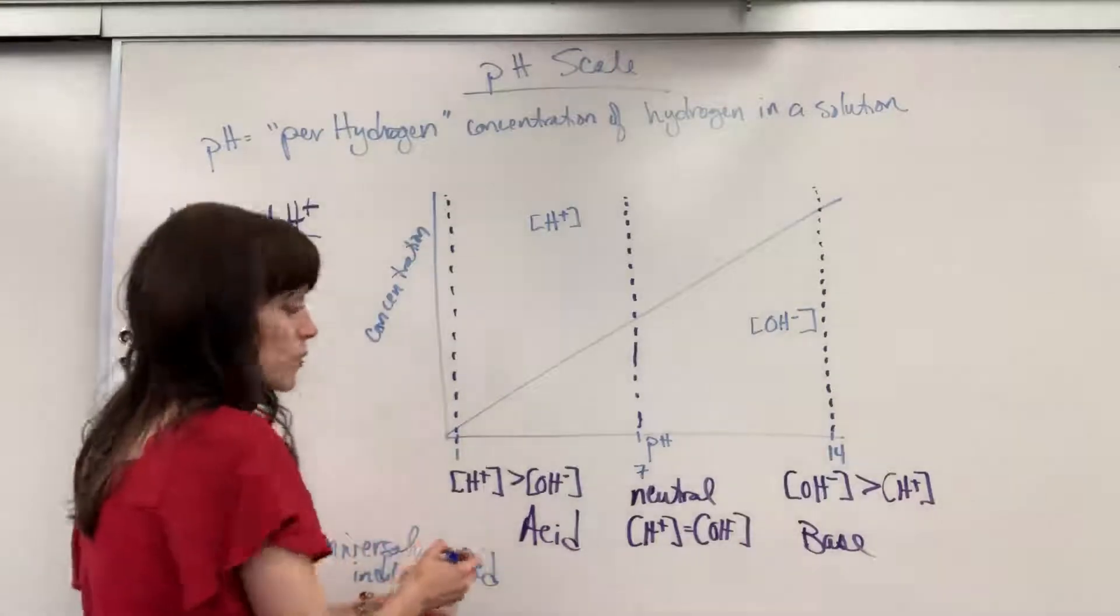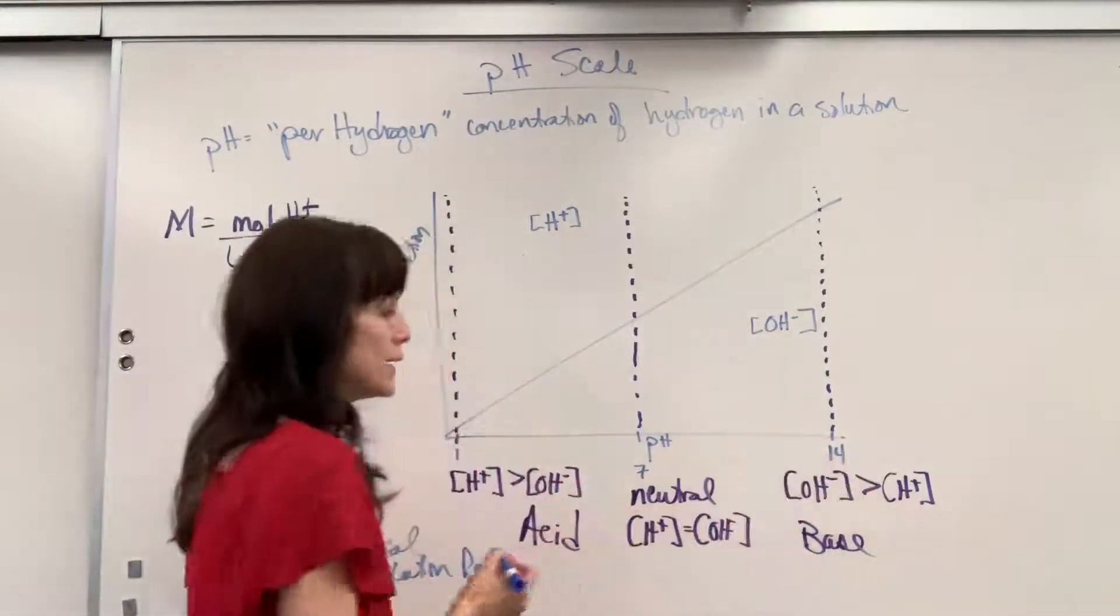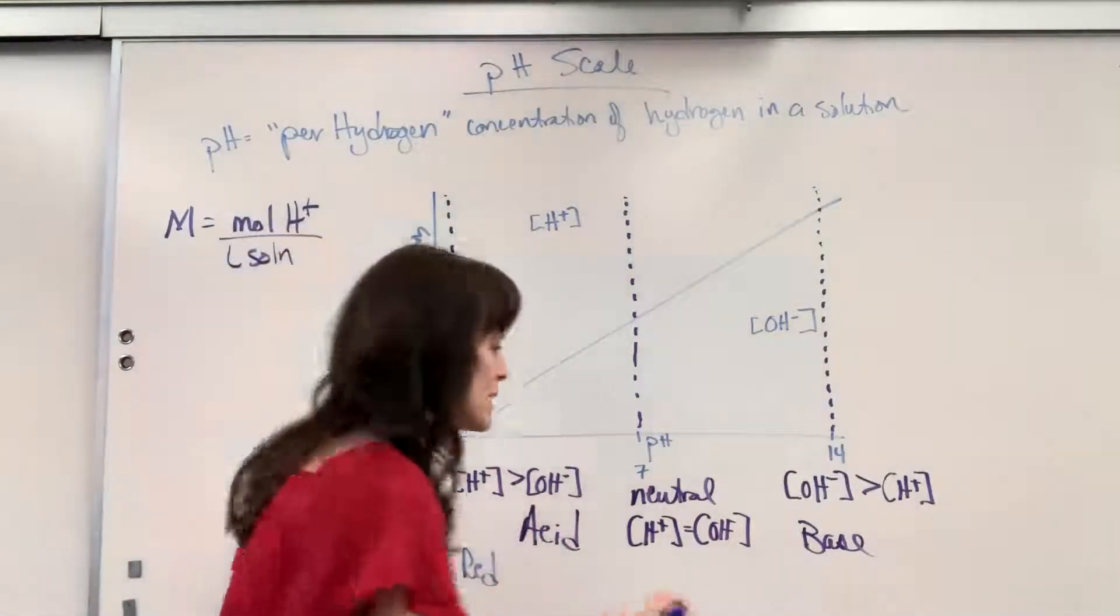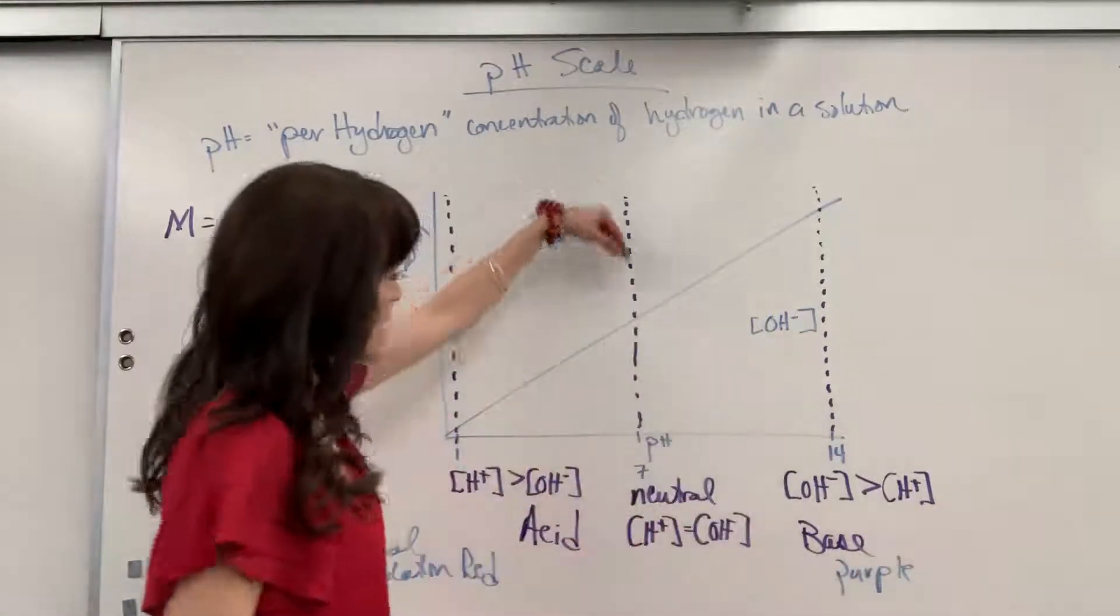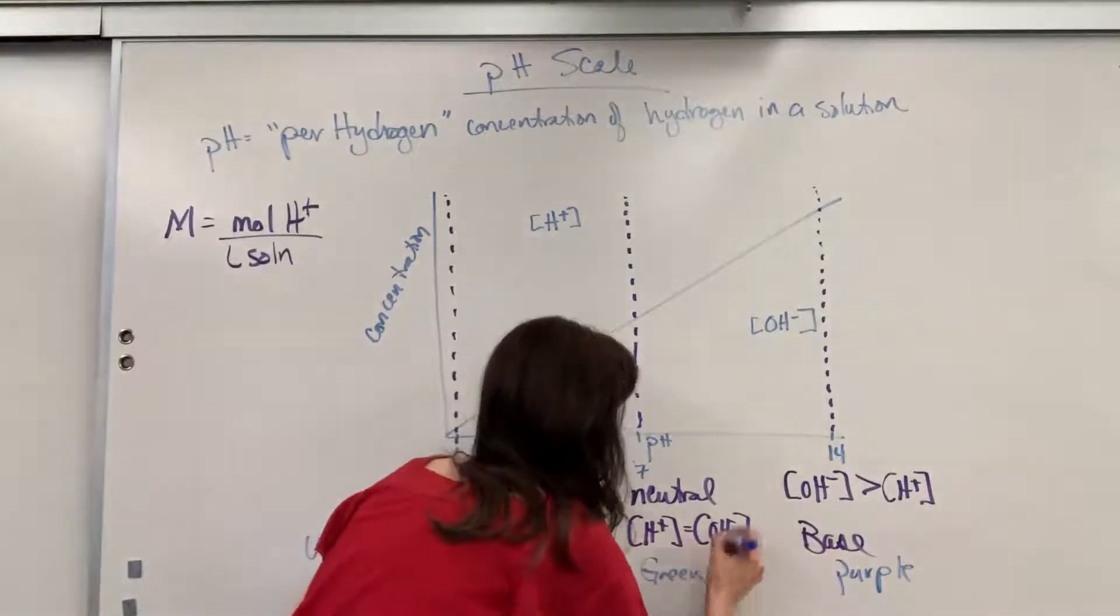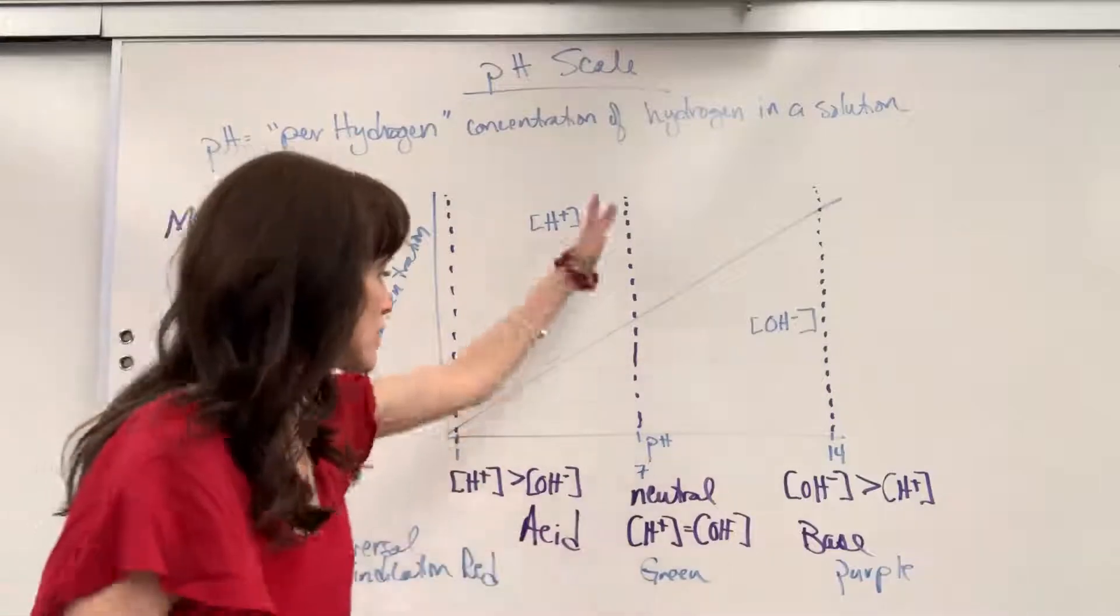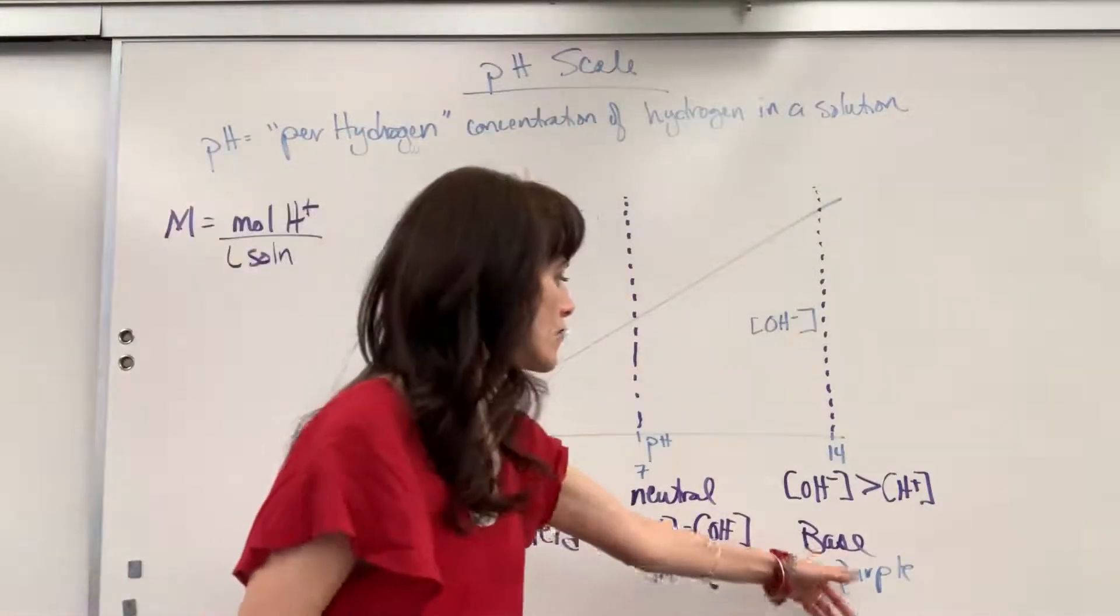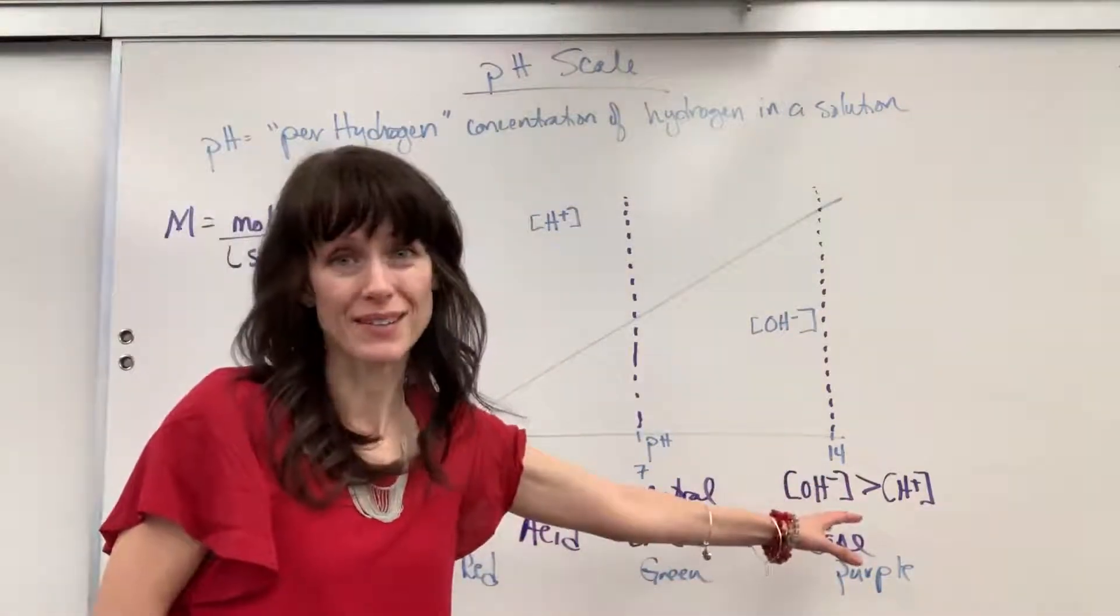And then we're going to do ROYGBIV all the way up to our 14, and that's going to be your purple, your violet. So this is going to be your purple. And then spot on, right in the middle, universal indicator color is green. Color is green. So you're going to have red, orange, yellow, green is your number seven. And then the blue, indigo, violet, that purple, those are going to be your base colors.